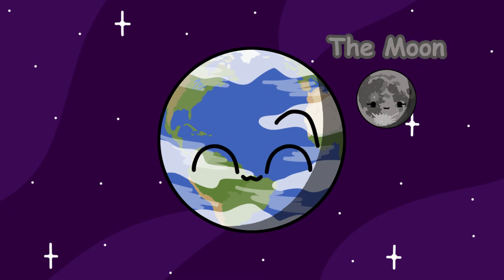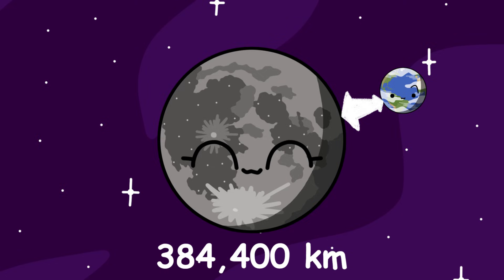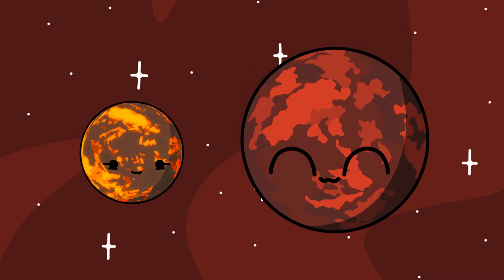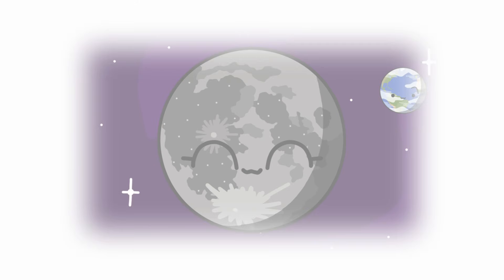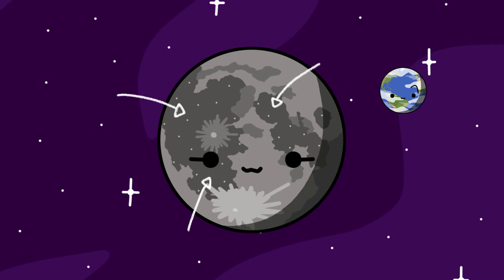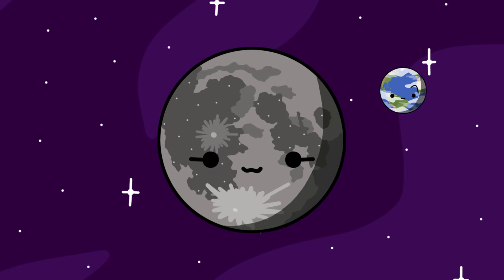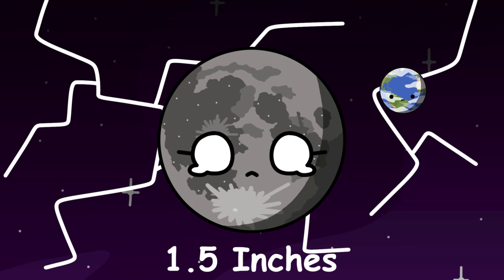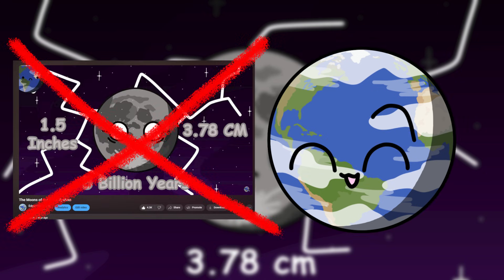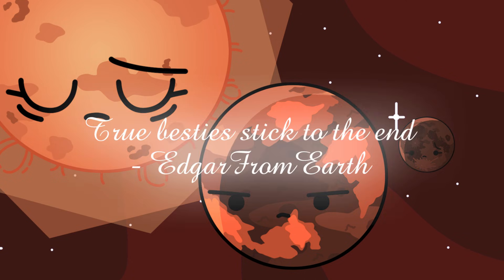Earth has one moon named the Moon, or Luna. Luna has a diameter of 3,475 kilometers and orbits Earth at a distance of 384,400 kilometers every 27.3 days. Luna was born from a collision between the Earth and another object around half of its size that happened 4.5 billion years ago in the early solar system. Luna is responsible for making our tides, maintaining our stable axial tilt, and 24-hour long days. Luna also has these darker spots known as seas, believed to have been ancient seas of lava from her formation that have long since cooled off and became smooth basalt. Luna is slowly drifting away from us at a rate of 3.78 centimeters per year. But don't worry — she will stick around with the Earth until the Sun dies, or will get consumed by the red giant Sun along with Earth. True besties stick together until the end.